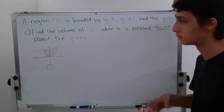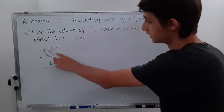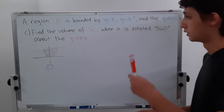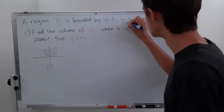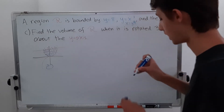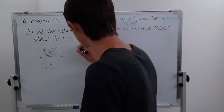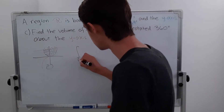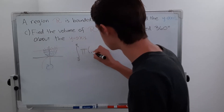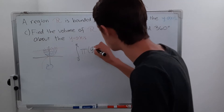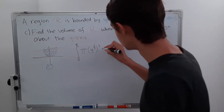Our radius is not going to be just a number — it's going to be a function. Since we're rotating about the y-axis, we have to change the equation to x equals y to the 1/3 power. So we set up our integral from 0 to 8 — those are our y-value bounds — and we have pi times our radius, which is y to the 1/3, squared. That gives us pi r squared. Then we add them all up with dy.